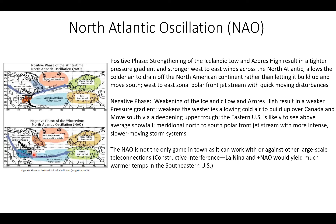This also results in more of a snowstorm threat along the east coast of the United States — above-average snowfall across the east. More meridional, north-to-south polar front jet stream configuration. More intense, slower-moving storm systems as well with a negative NAO.